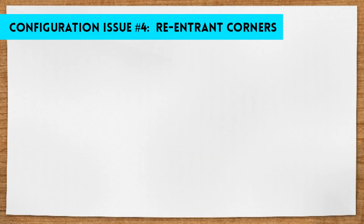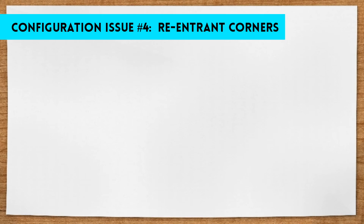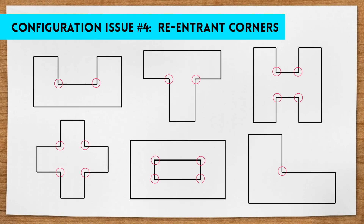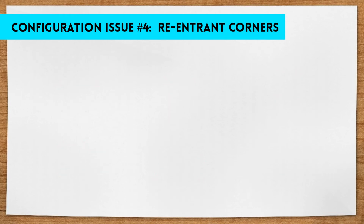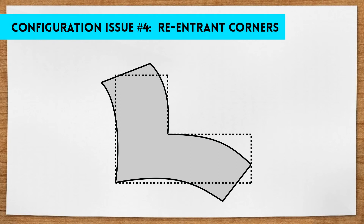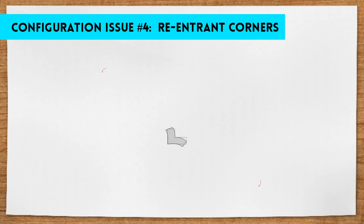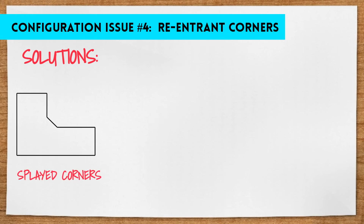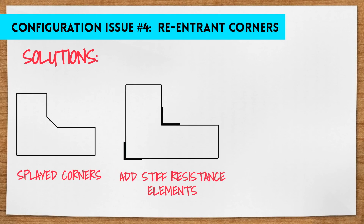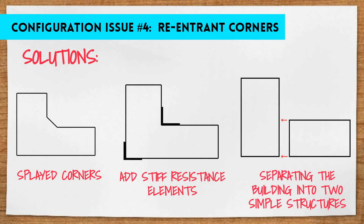The fourth issue is re-entrant corners. The two main problems they cause are torsion and differential motions between different wings of a building. For example, in an L-shaped building, wing one may move in one direction while wing two moves in the other direction. Solutions to the re-entrant corner issue include using splayed corners, adding stiff resistance elements to the corner, or actually separating the building into simpler shapes so that each entity can easily resist vertical and lateral forces on its own.